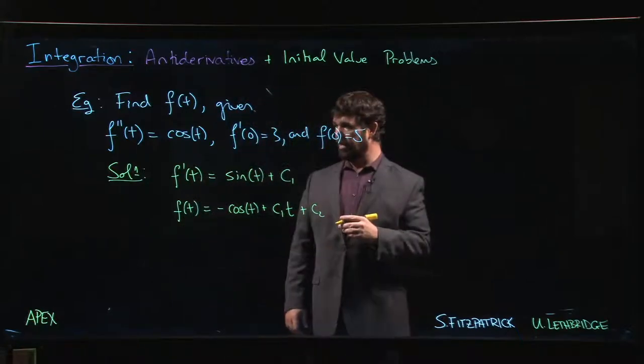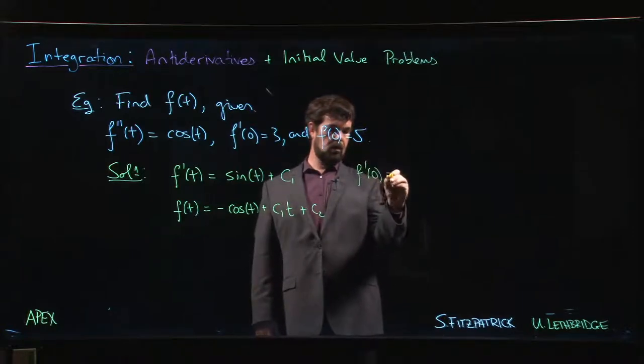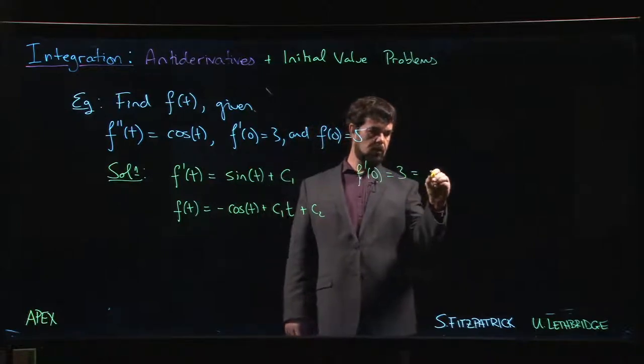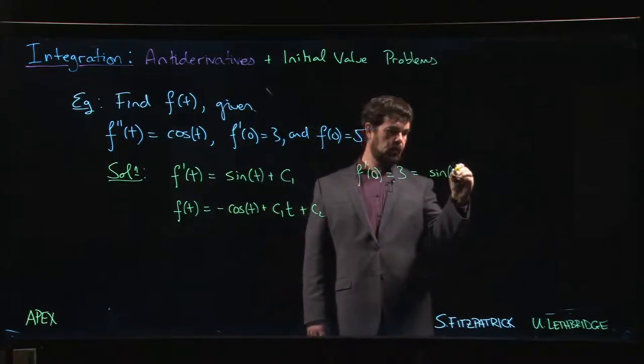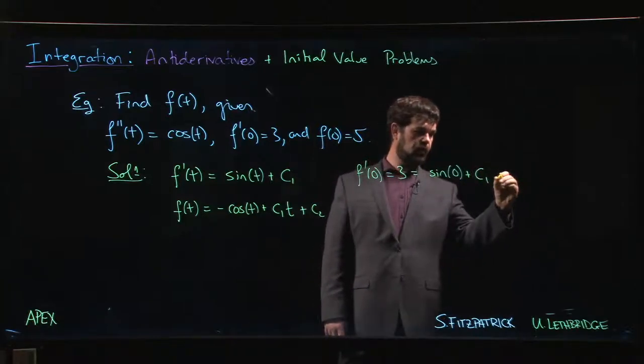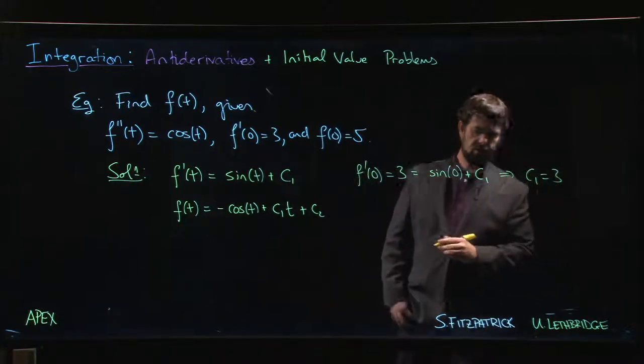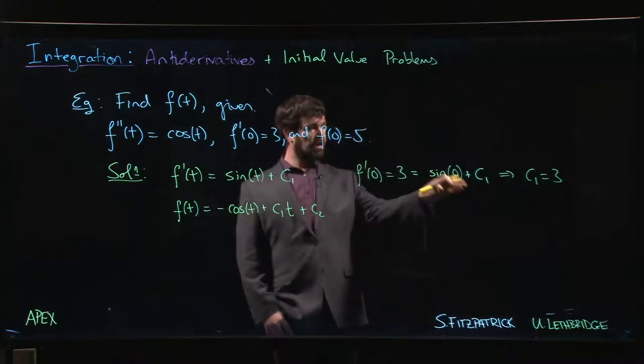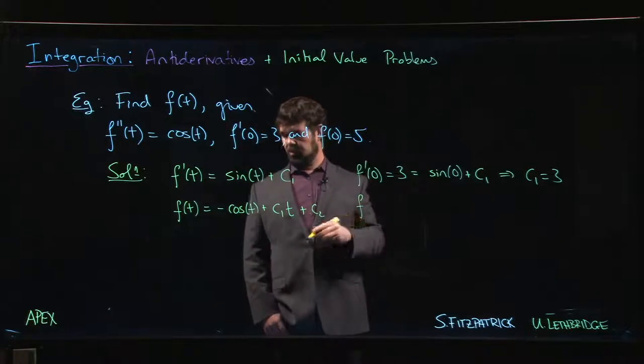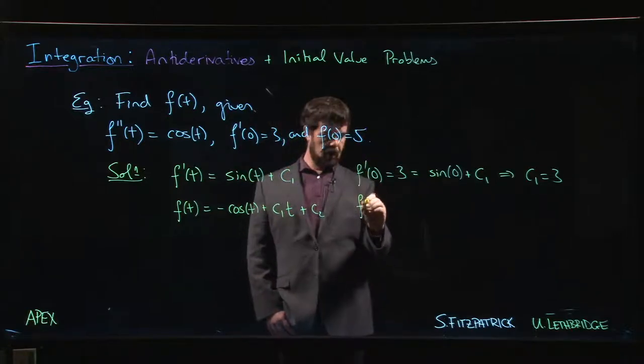Now we plug in our values. So f prime of zero is three, but it's also equal to sine of zero plus c1. So that tells me that c1 is equal to three. Now, like I said, I could have done that before I bothered with this antiderivative, and then I would have been able to say, okay, so f prime is sine t plus three. So now I'm this far.